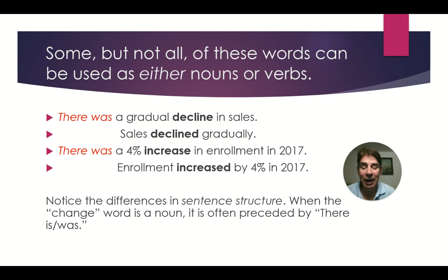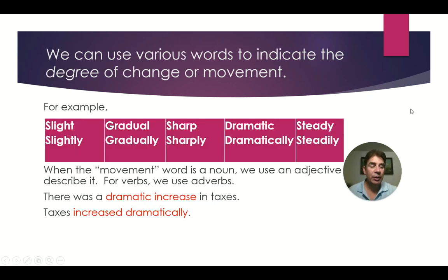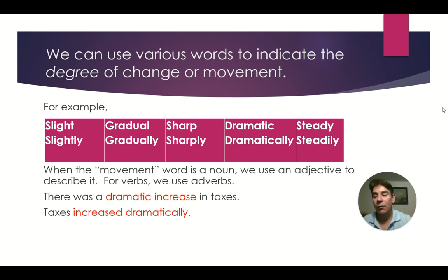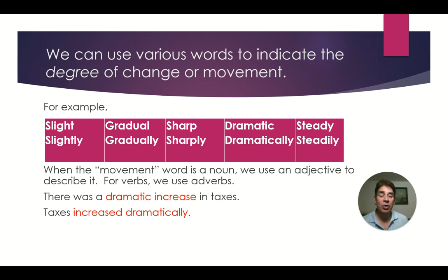Notice the difference in sentence structure here. When the change word is a noun, it is often preceded by there is or there was. To indicate types or degree of change, there are several words to use. For example: slight or slightly, sharp or sharply, dramatic or dramatically. When the movement word is a noun, we use an adjective to describe it. For verbs, we use adverbs. For example: there was a dramatic increase in taxes. Taxes increased dramatically.